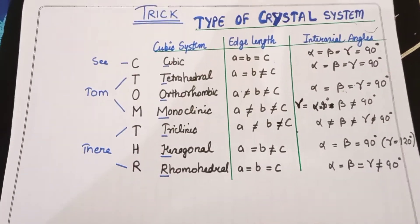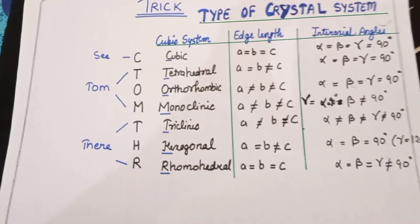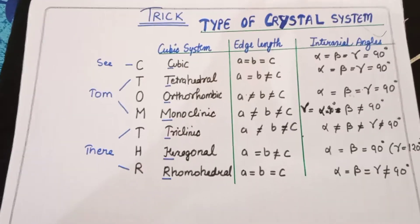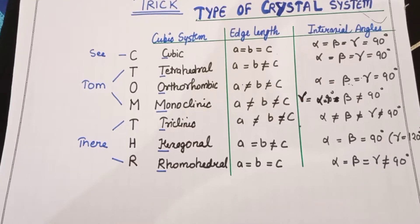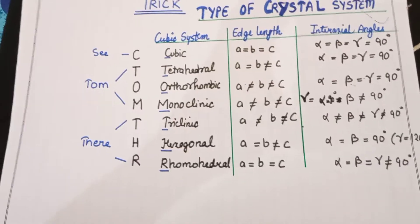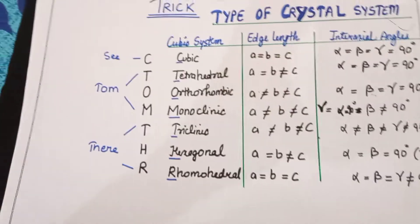Now the question arises: how do you learn edge length and interaxial angles? So if you have to remember edge length, then you have to remember a specific order.